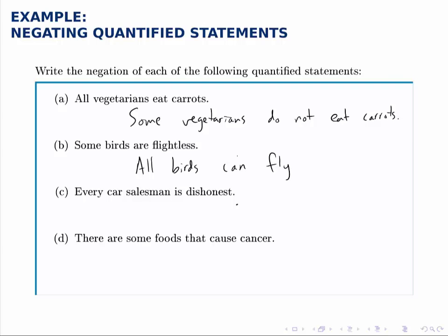And this is typical: when you negate a universal quantifier, your final statement will have an existential one, and vice versa. For part C, again we have a universal one — 'every' is just like 'all' — so saying every car salesman is dishonest, the negation of that would be that some are not. Or you could write 'at least one is not,' and that would be equivalent.